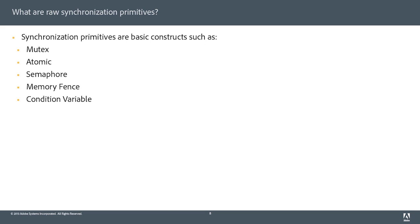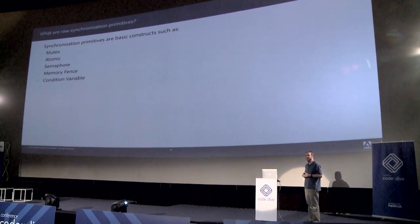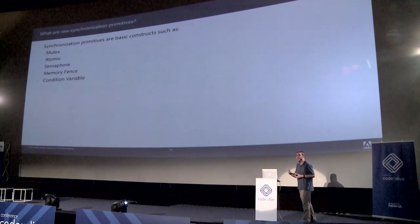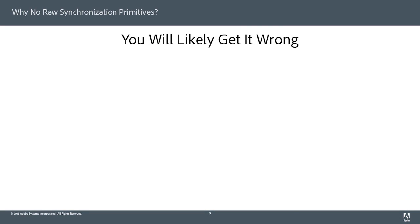What's a raw synchronization primitive? These are mutexes, atomics, semaphores, memory fences, and condition variables. The number one reason why you don't want to use them is you'll likely get it wrong. And I know this because almost everybody I know gets these wrong.